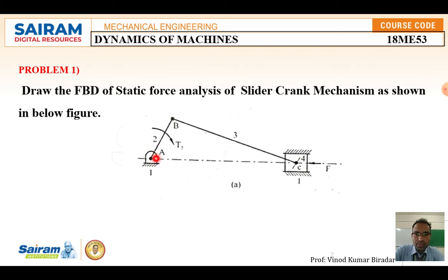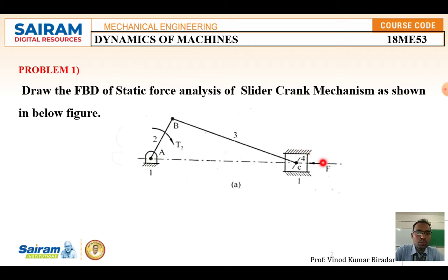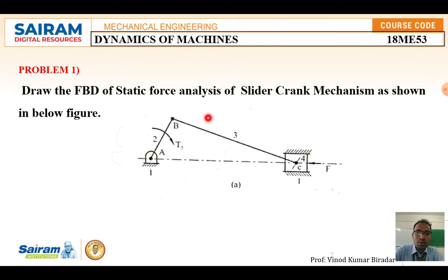From one end, which is fixed, to point B is element number two. From B to C is element number three. The block is the piston, which we consider as element number four. Some external force is applied to the piston. While solving problems, they may give values such as the length of the connecting rod. The piston is element four, the connecting rod is element three, and the crankshaft is element two.